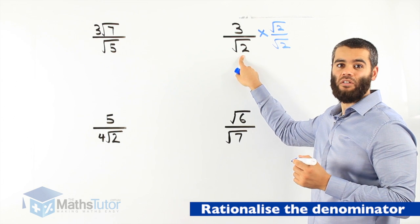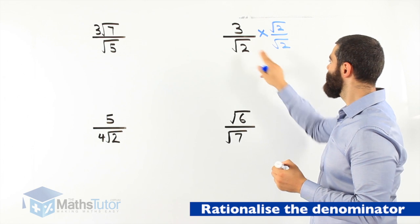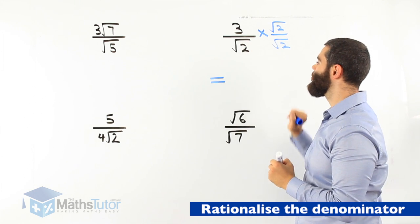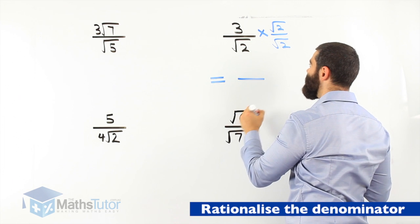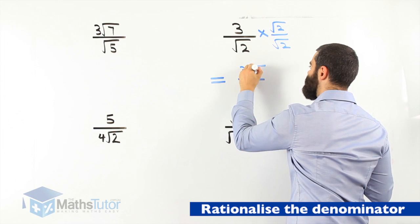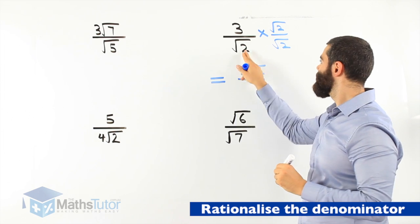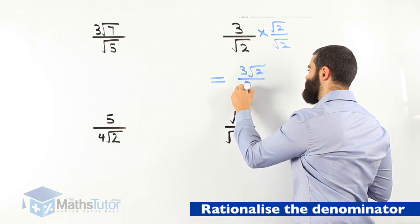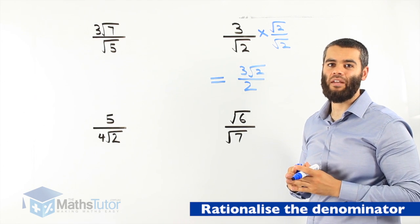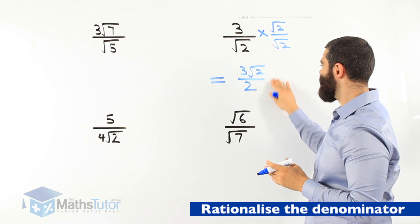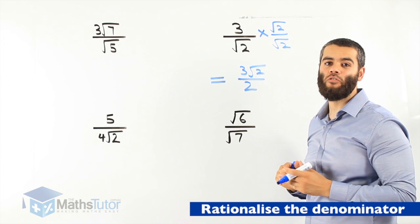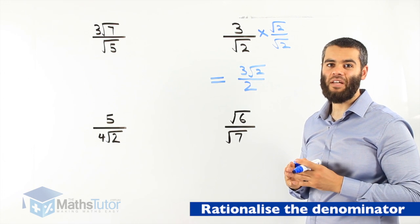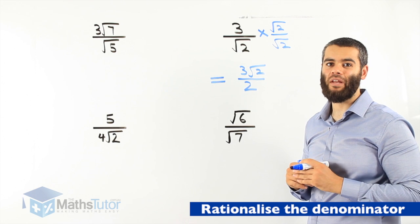Where did we get root 2 from? It's the actual surd in the denominator. So root 2 times root 2, and 3 times root 2. The answer: 3 times root 2 is 3 root 2, and root 2 times root 2 is actually 2. So we get 3 root 2 over 2. We have now rationalized the denominator. This answer is exactly the same as 3 over root 2, but it's written in a way where the denominator is a rational number.